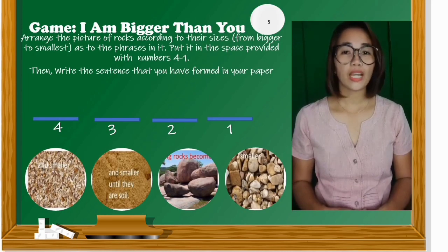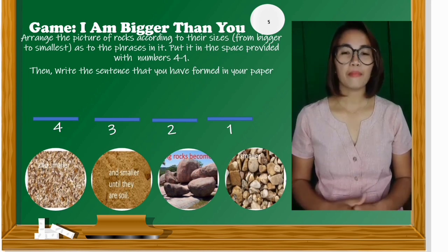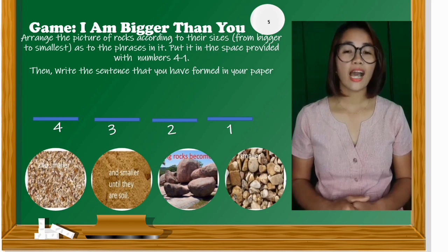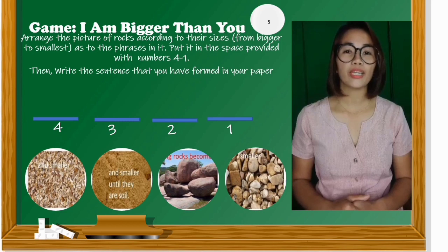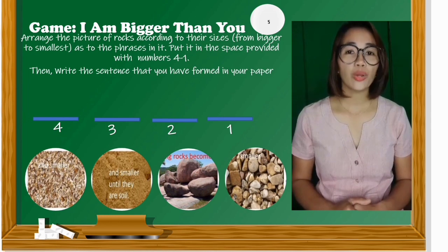Before we start our lesson, let's have a game first. This game is called 'I am bigger than you.' You are going to arrange the pictures of the rocks according to their sizes based on the phrases in it. Put them in the spaces provided with numbers 4 to 1. Then write the sentence that you have formed in your paper.